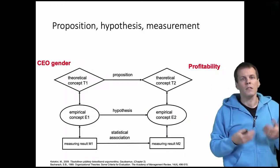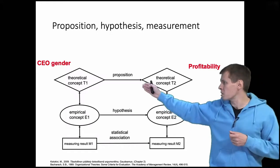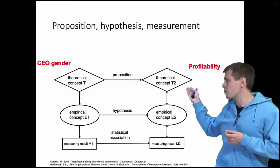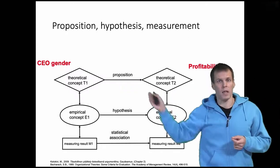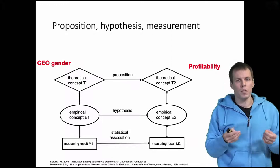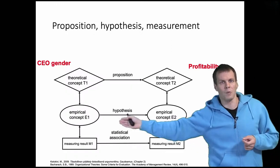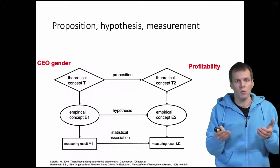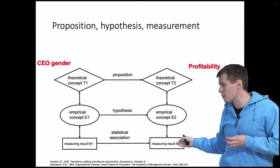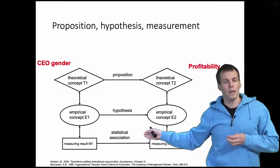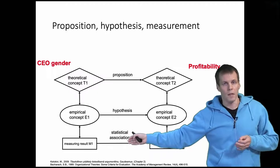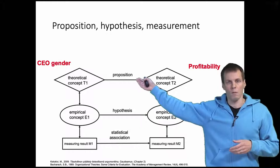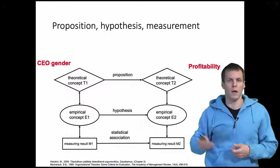How do we actually test this? If we have a proposition, we need a way of assigning numbers to represent profitability and CEO gender. Then we make a hypothesis that these empirical representations are associated — because we can't really observe causality, we can only observe associations. Then we collect some data and test for statistical association. If we find a statistical association, we conclude that we could not reject the hypothesis, and therefore we found some evidence for the proposition.